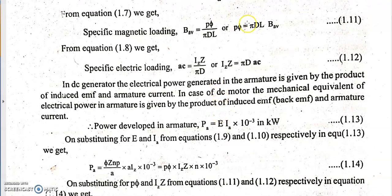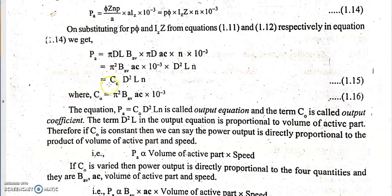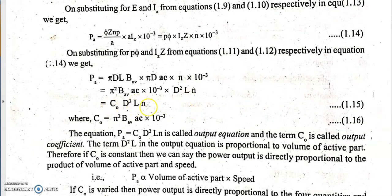Substituting for total magnetic loading and total electric loading using the specific loading equations — Pφ = πDL × B_average and Iz × Z = πD × AC — and separating terms, we obtain φ² and D²L as one group, with B_average × AC as another. The term π² × B_average × AC × 10⁻³ is defined as C₀, the output coefficient of the machine. The output equation becomes: PA = C₀ × D²L × n.